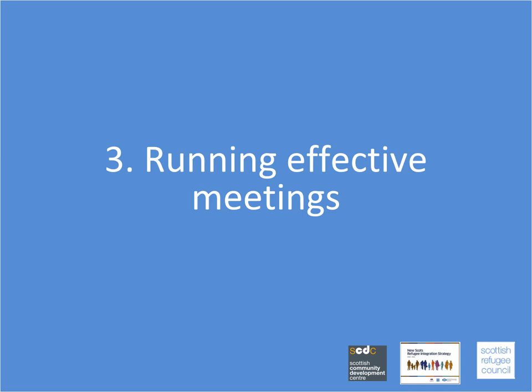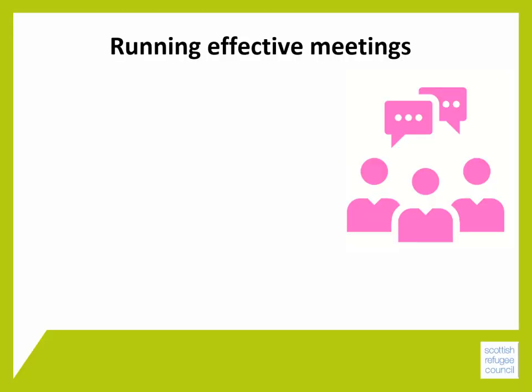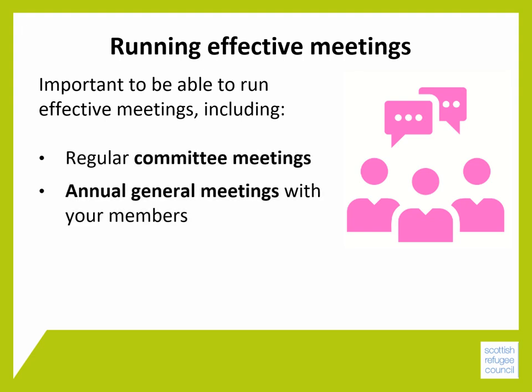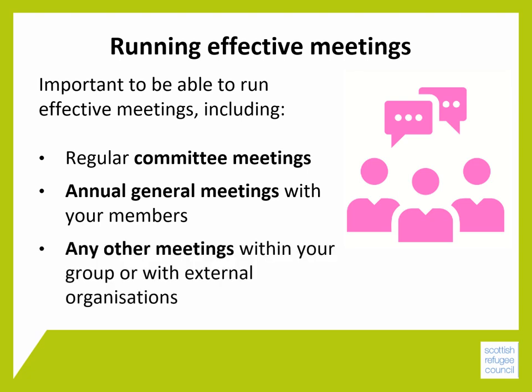Running effective meetings. As a community group, it's important to be able to run effective meetings. This could include regular committee meetings and annual general meetings with your members, and how to run both these meetings will usually be set out in your constitution or set of rules. Also any other meetings within your group, for example planning meetings or with external organisations, funders or partners.